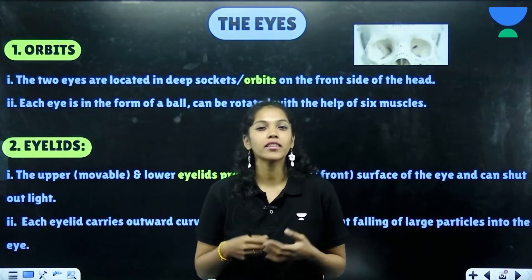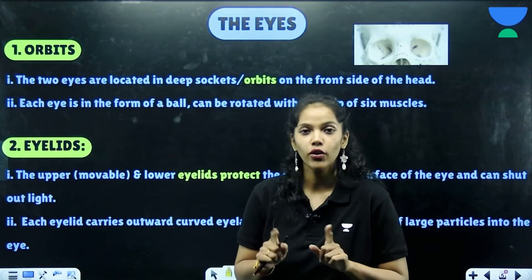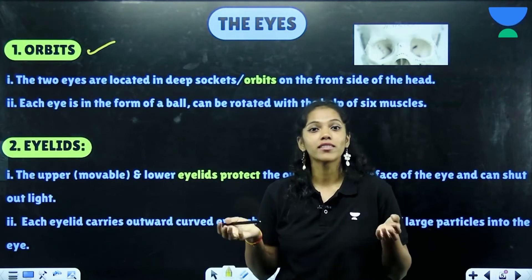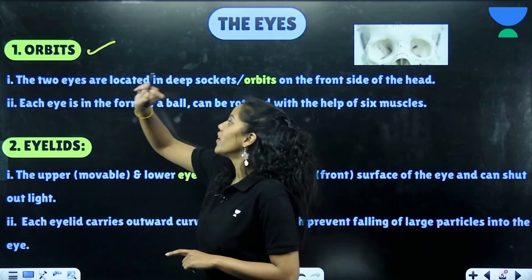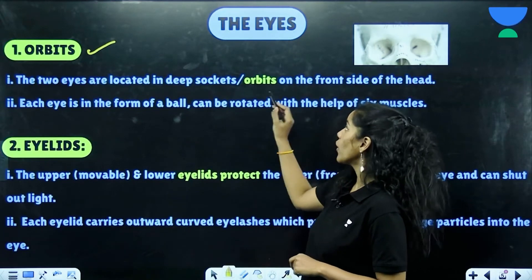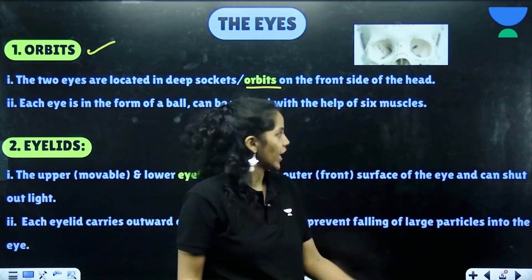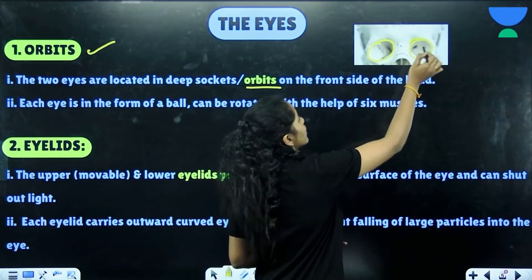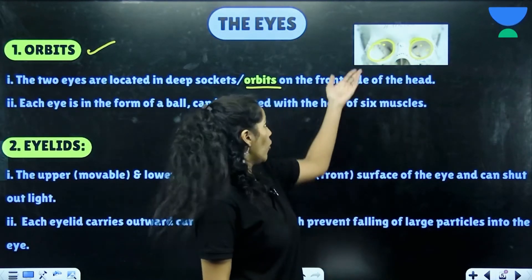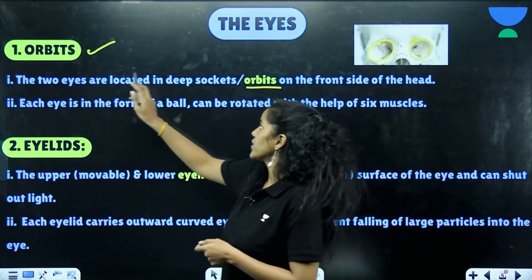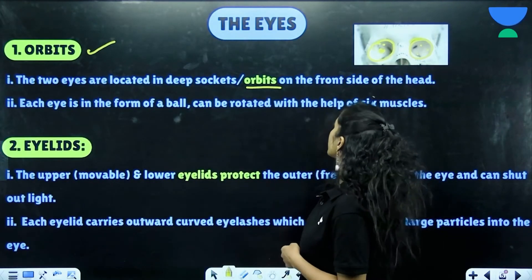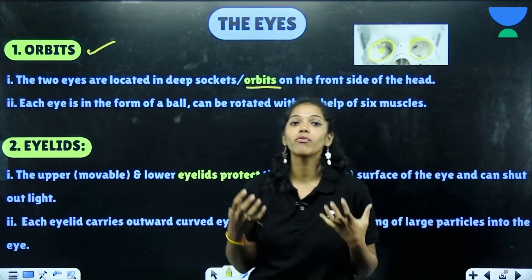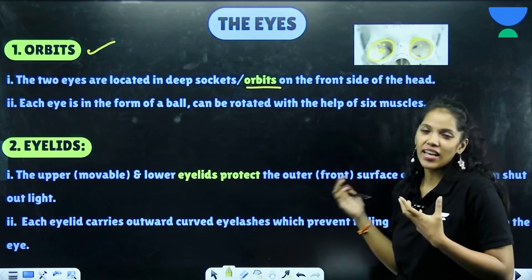Moving on, we come to the eyes. The first part we talk about are the orbits. The two eyes are located in deep sockets, or orbits, on the front side of the head. Each eye is in the form of a ball and can be rotated with the help of six muscles. Next, the upper movable and lower eyelids protect the outer front surface of the eye and can shut out light.